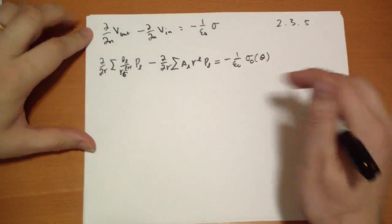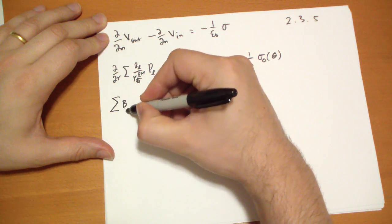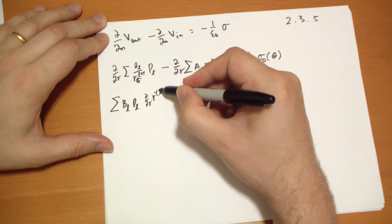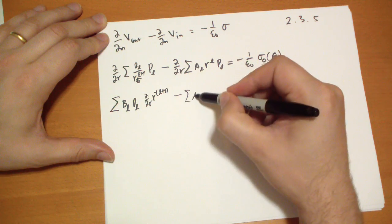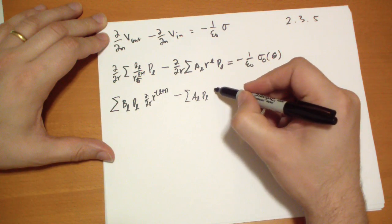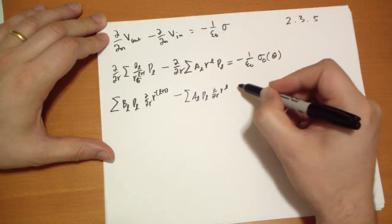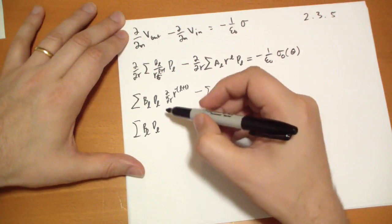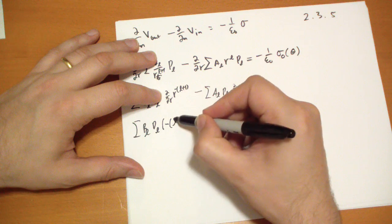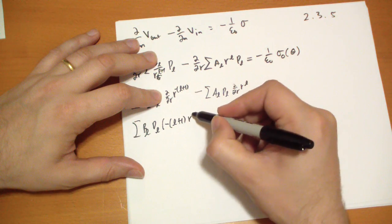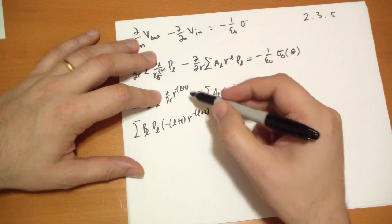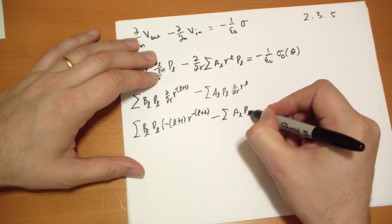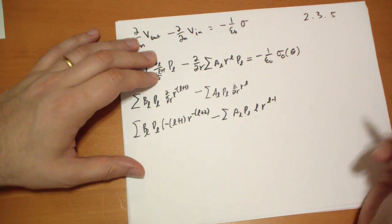Taking the derivative of this, the constants can come out. So we get the sum of B_L*P_L, and d/dr of R^(-L-1), minus the sum of A_L*P_L, derivative of R^L. And that's going to be equal to B_L*P_L, we take a minus L plus one. Now it's R^(-L-2). The minus goes inside. Minus the sum of A_L*P_L. This is just L. R^(L-1).